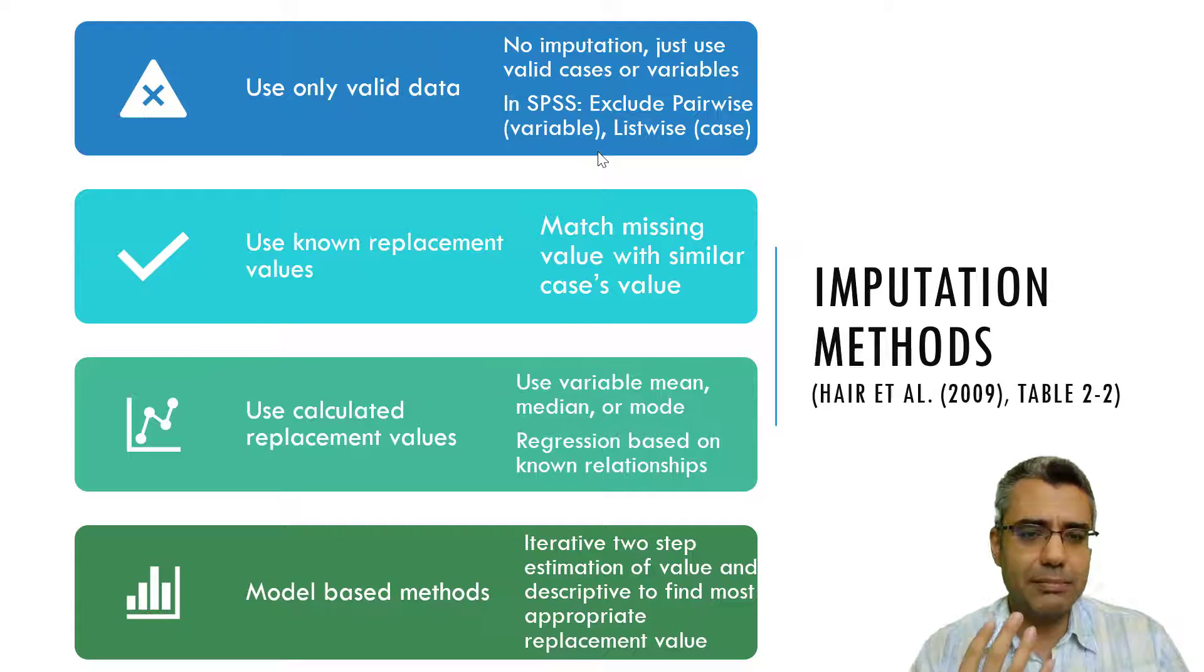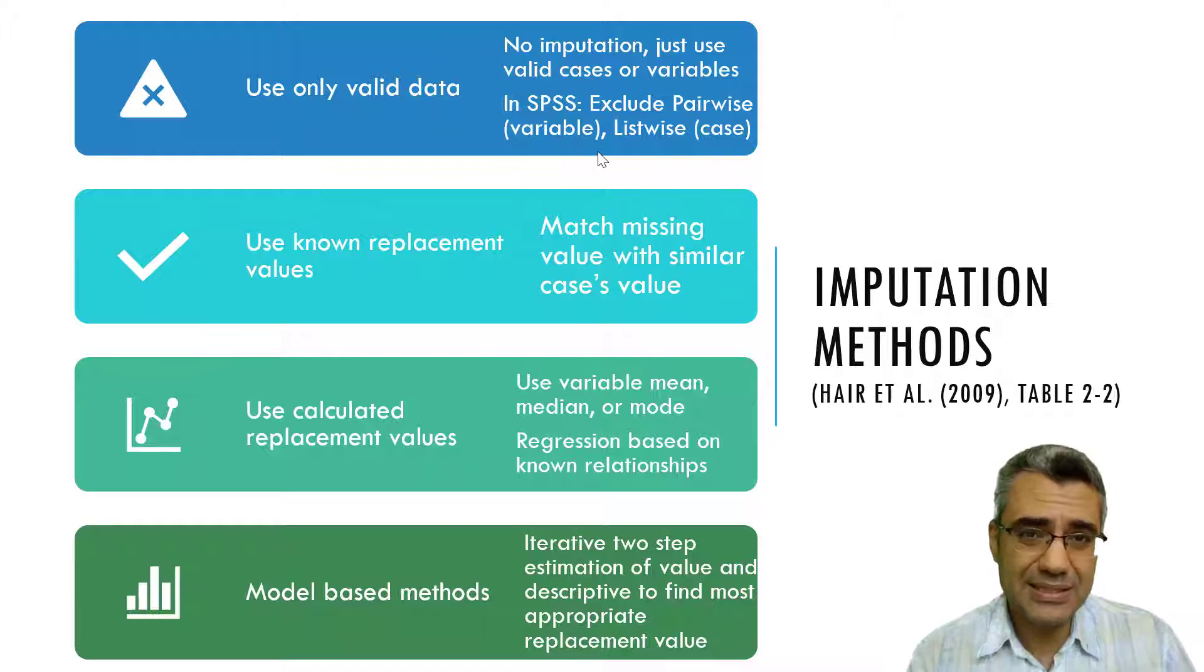Generally there are four main methods for handling missing cases. Number one is you may use only valid data, means you don't do an imputation, you just use cases that have no missing data. In SPSS there are two methods: pairwise and listwise approach. You can Google to know more about them.